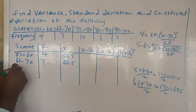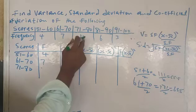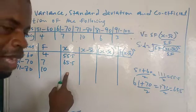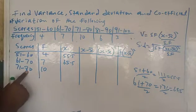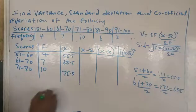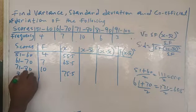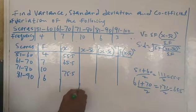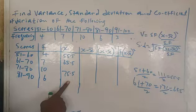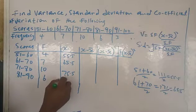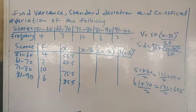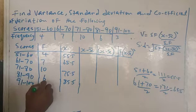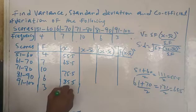For 71 to 80, frequency is 10, and 71 plus 80 divided by 2 gives 75.5. For 81 to 90, frequency is 6, and 81 plus 90 divided by 2 gives 85.5. For 91 to 100, frequency is 3, and you will get 95.5.